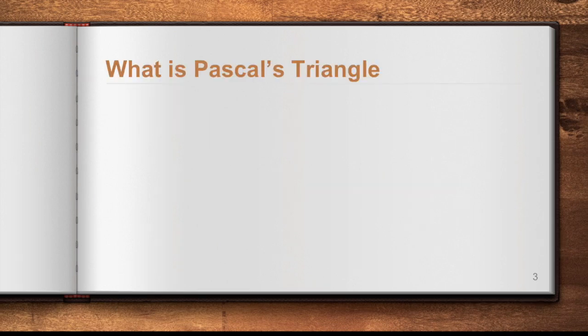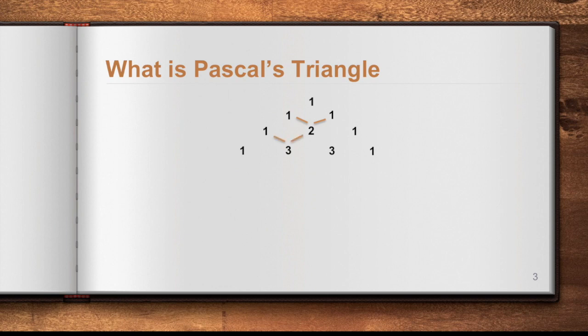So what is Pascal's Triangle? This is named after a French mathematician Blaise Pascal. The triangle starts from 1, then followed by 1, 1 at both ends, and then the next row will give you 1, 2, 1. The 2 is obtained from adding 1 and 1. The next row gives you 1 at both ends, and the 3 is the sum of 1 and 2, and the other 3 is the sum of 2 and 1. That's how you obtain the numbers in the succeeding rows.